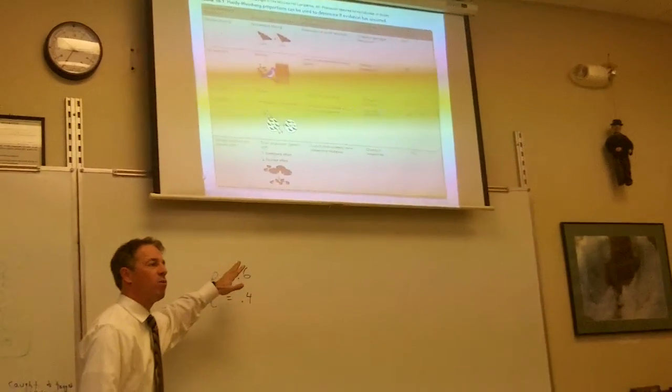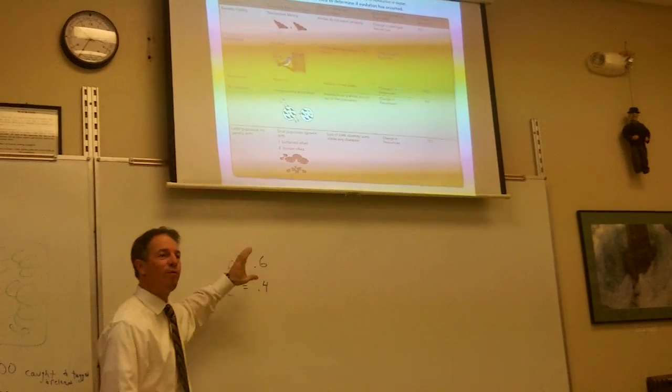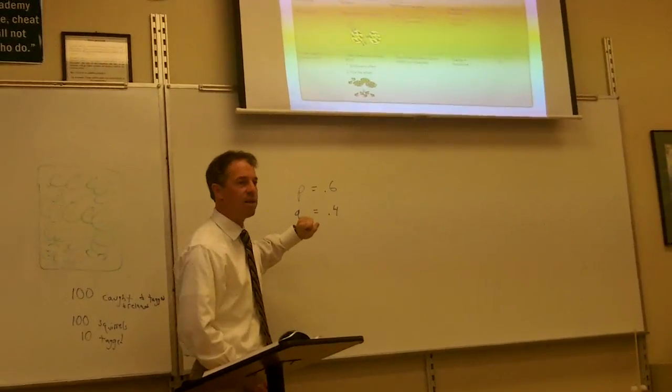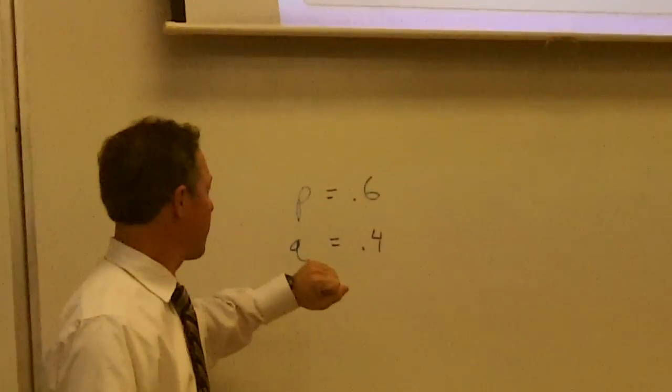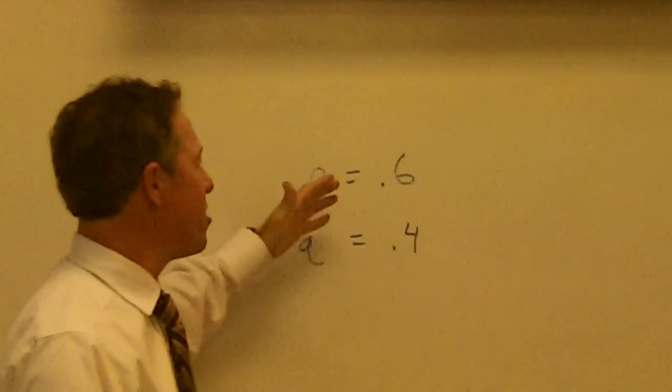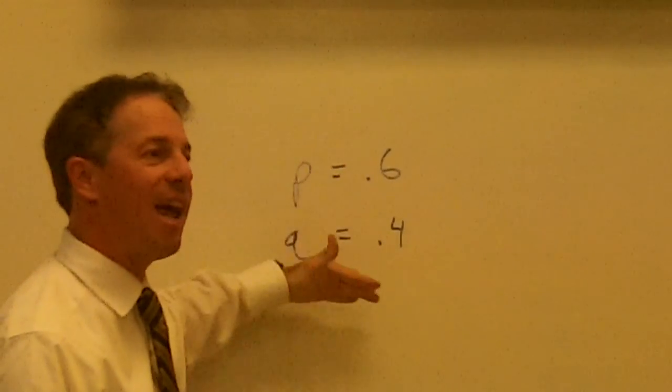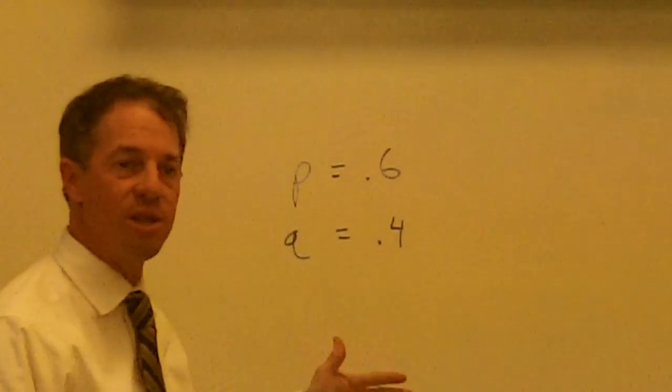So, the Hardy-Weinberg equations talked about these allele frequencies, P and Q. We're on page 292. P and Q are numbers that you can figure out about a population. You can figure out what the allele frequencies are for different genes.